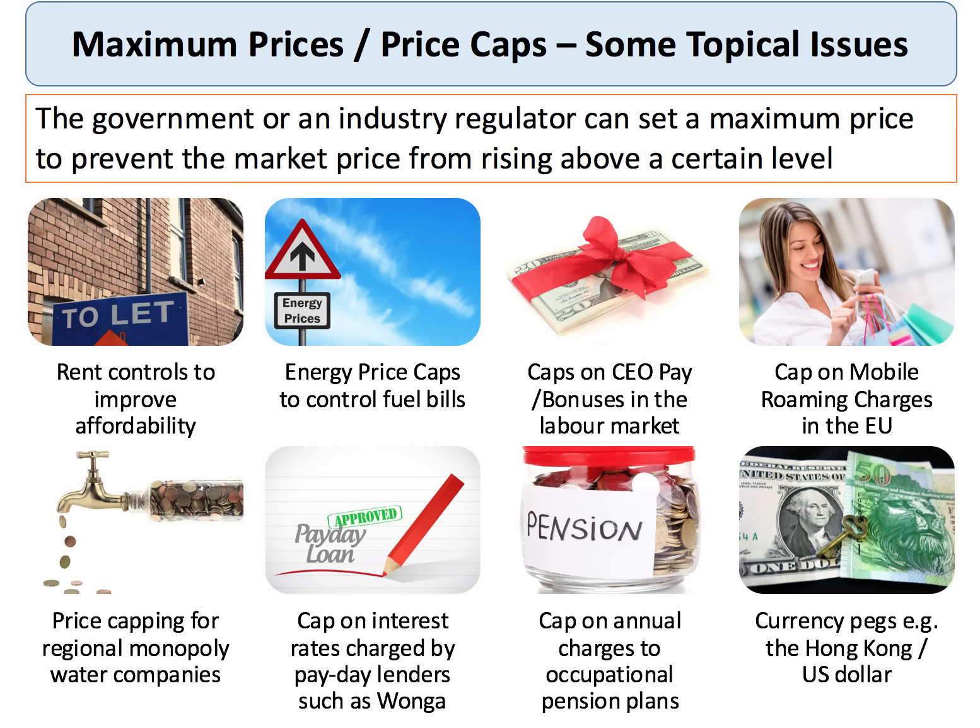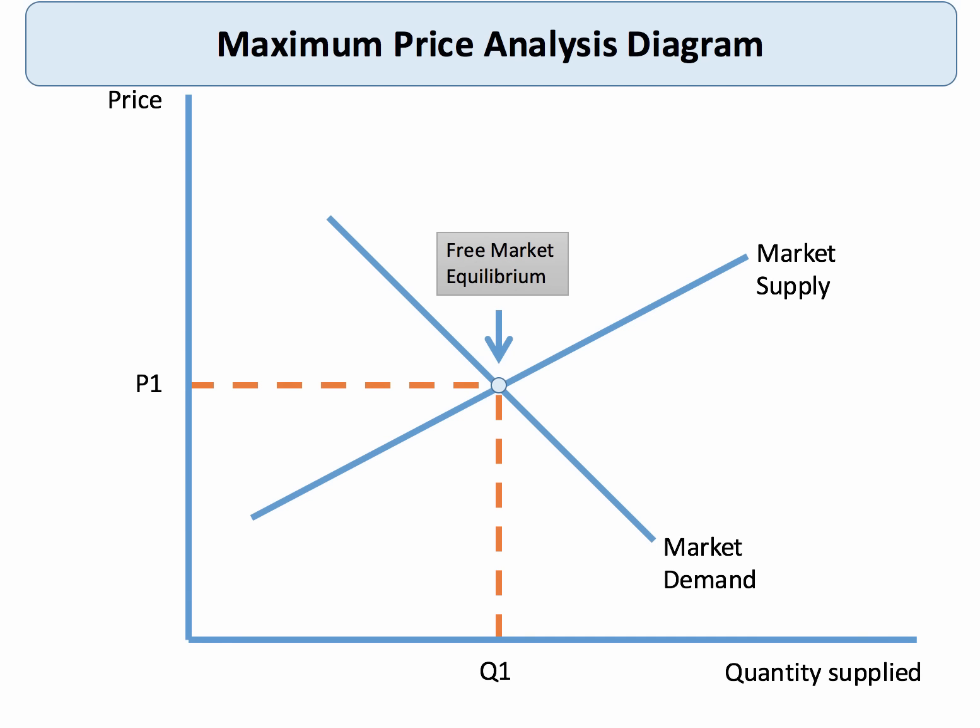So here we're thinking about the economics of price caps and maximum prices in a sector. We're going to work through the analysis in the next couple of minutes. If there's a free market, this particular market reaches equilibrium where market supply meets market demand.